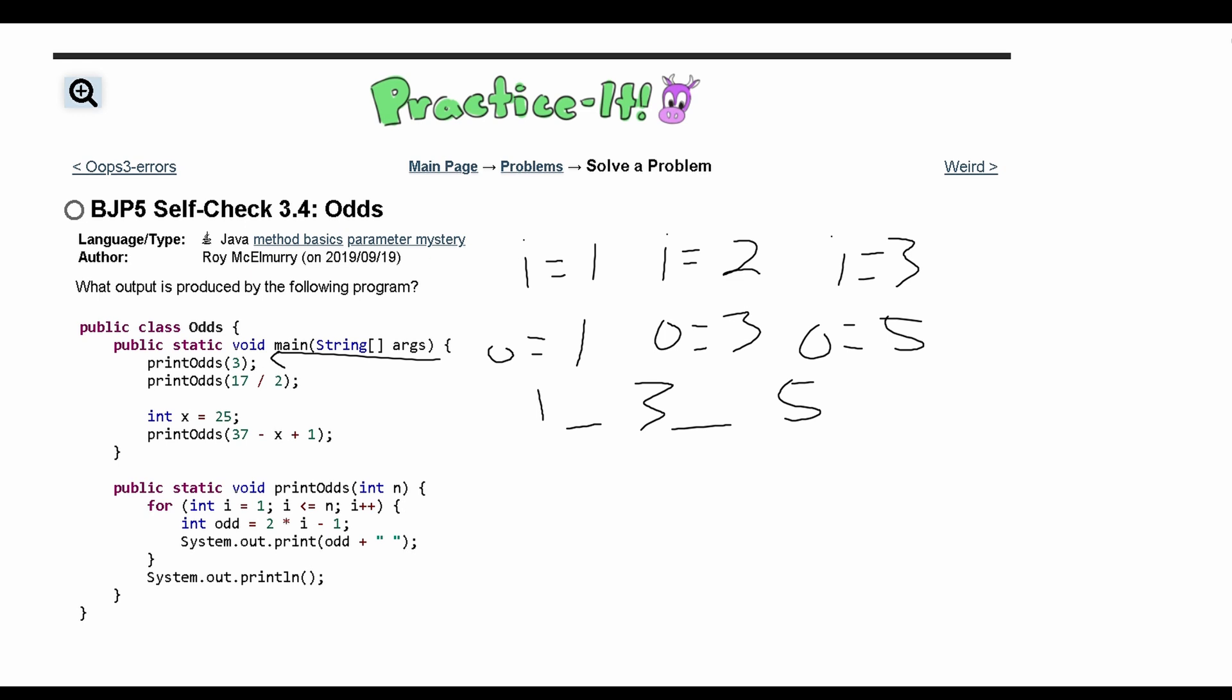After this we have another method call right underneath it. This is going to give us, this is basically 16 divided by 2, so this is passing in 8 like this.